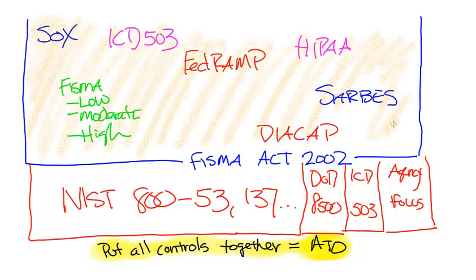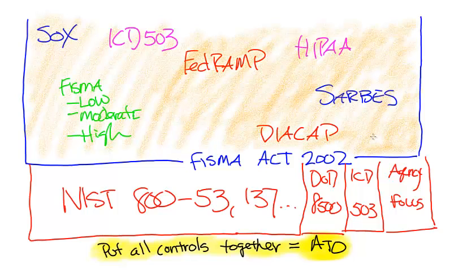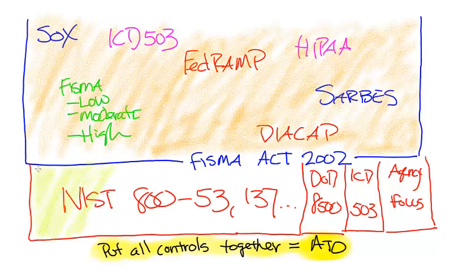So all of these standards that you hear floating out there — many of them are founded in the FISMA Act. FedRAMP is just another one that's a collection of these security controls listed down below, which most likely include the NIST series. Some may have DOD 8500, ICD-503, and agency-focused security controls, all of which contribute and provide the ATO.